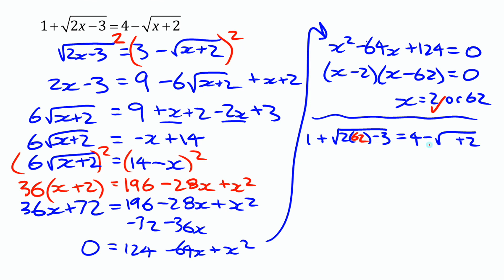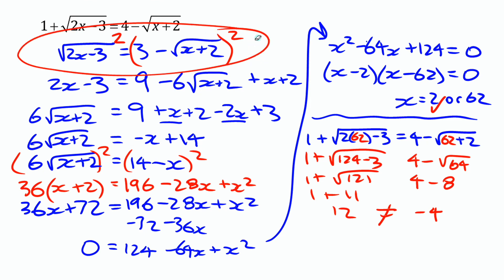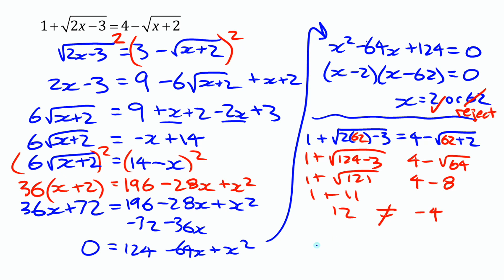Now trying x equals 62: on the left, square root of 124 minus 3 is square root of 121, which is 11. Adding 1 gives 12. On the right side, 4 minus square root of 64 is 4 minus 8, which is negative 4. These are definitely not equal — not because we made an error, but because squaring both sides can create extraneous solutions that aren't solutions to the original equation. So we reject x equals 62, and the only solution is x equals 2.